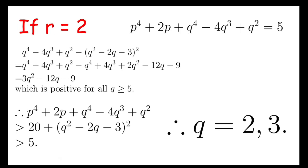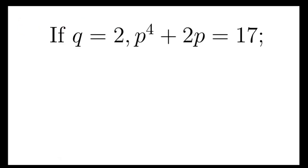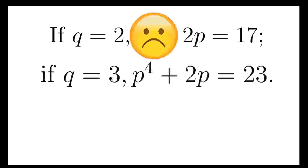Now, again, I can try them one by one. So, if q equals 2, we'll have p^4 + 2p = 17. Obviously no solution. And if q equals 3, p^4 + 2p = 23. Again, no solution. So, we'll have no solution for the second case when r is 2.